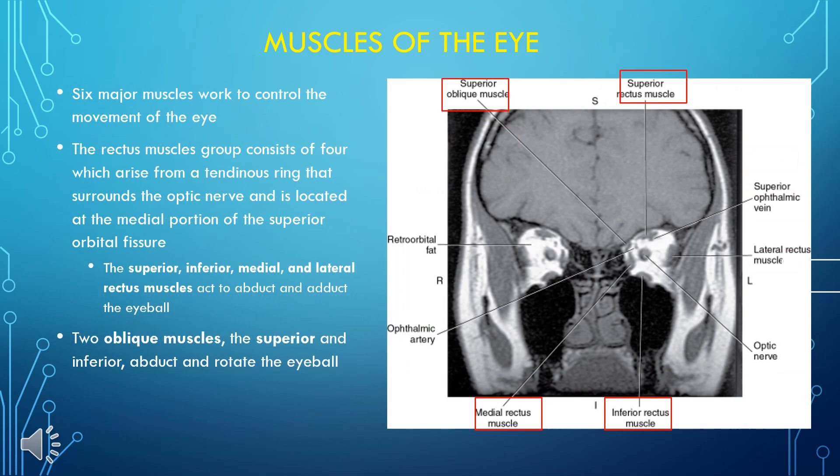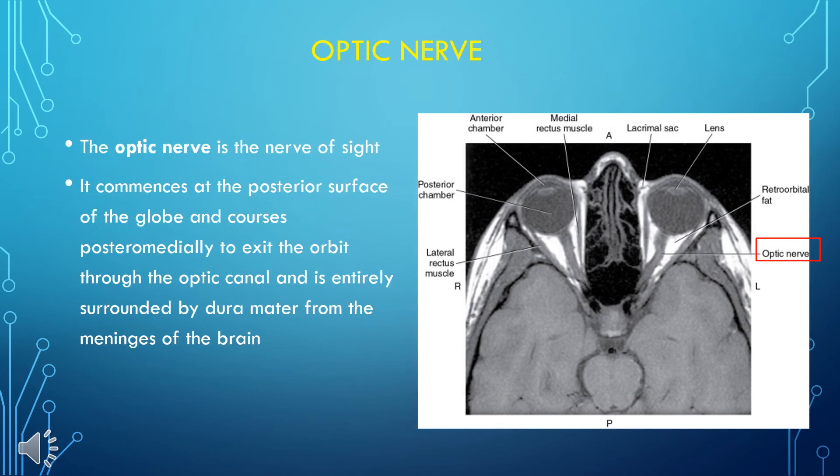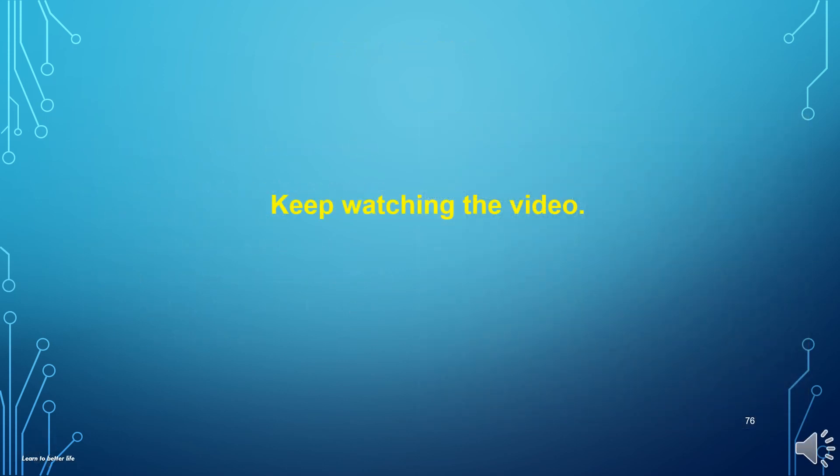Six major muscles work to control the movement of the eye. The rectus muscles group consists of four muscles which arise from a tendinous ring that surrounds the optic nerve, located at the medial portion of the superior orbital fissure. The superior, inferior, medial, and lateral rectus muscles act to abduct and adduct the eyeball. Two oblique muscles, the superior and inferior, abduct and rotate the eyeball. The optic nerve is the nerve of sight — it commences at the posterior surface of the globe and courses posteromedially to exit the orbit through the optic canal, entirely surrounded by dura mater from the meninges of the brain. Keep watching the video over and over again.